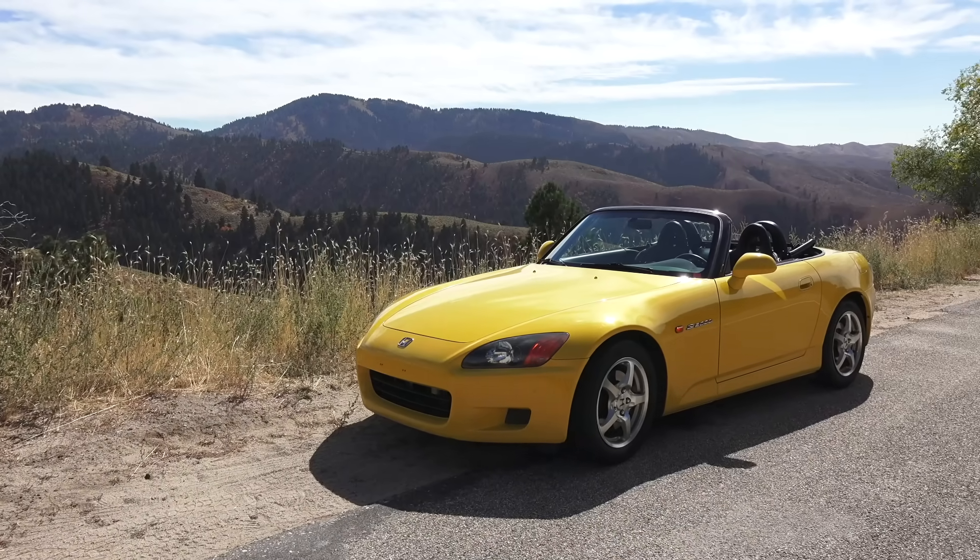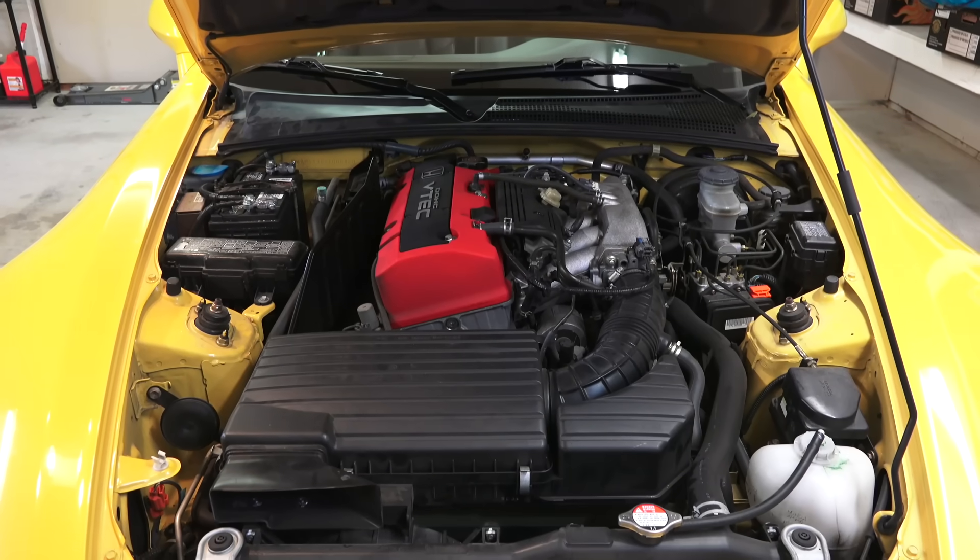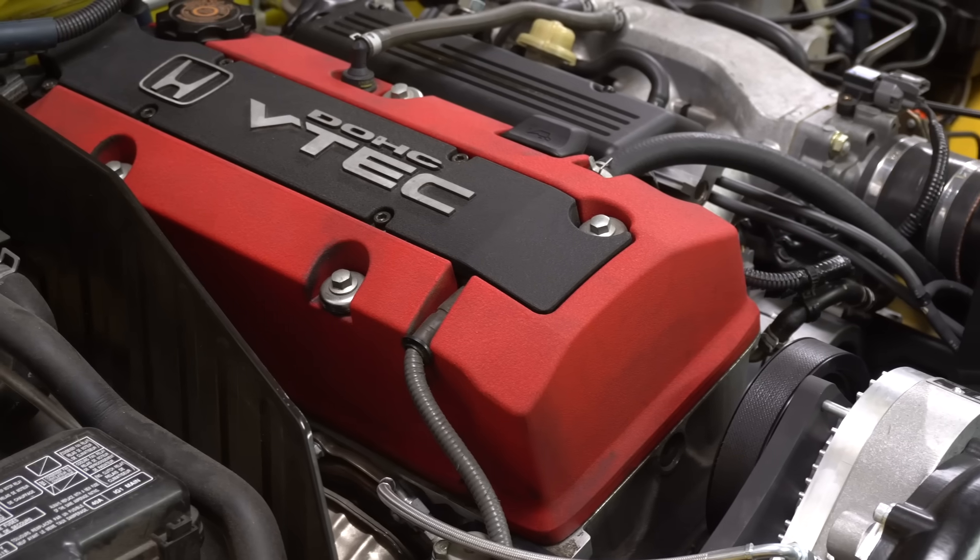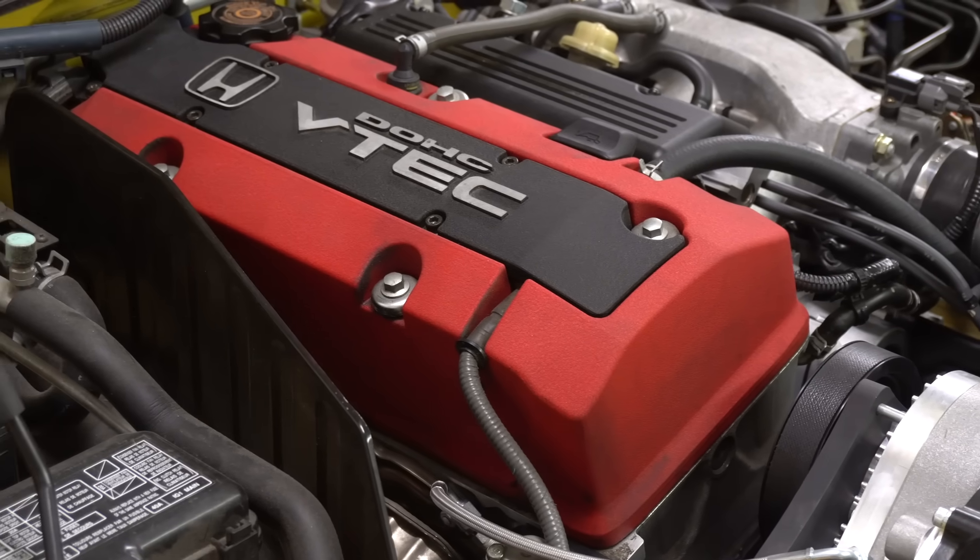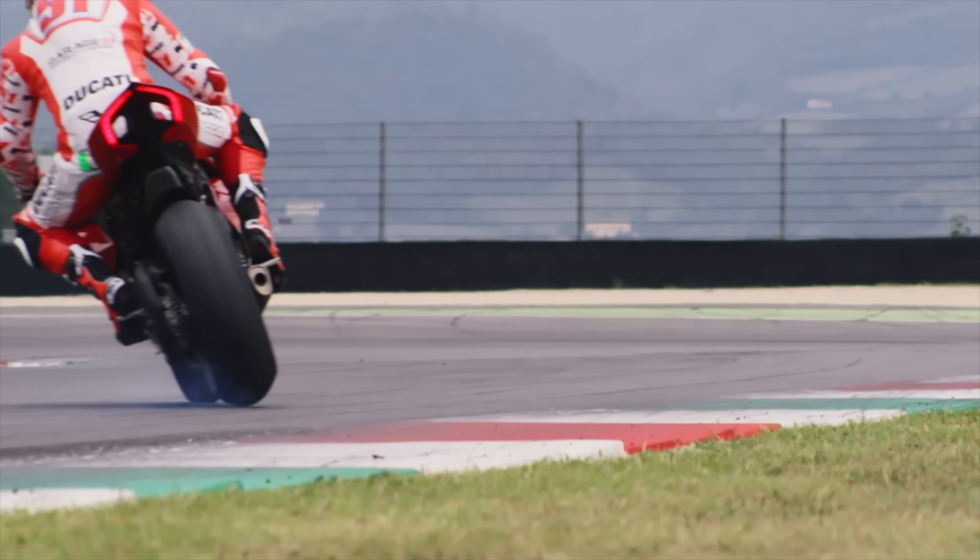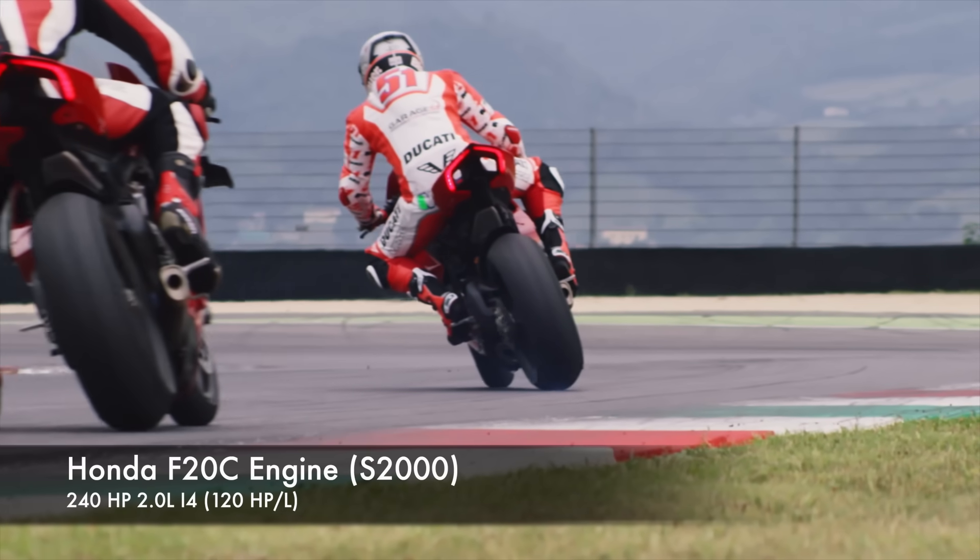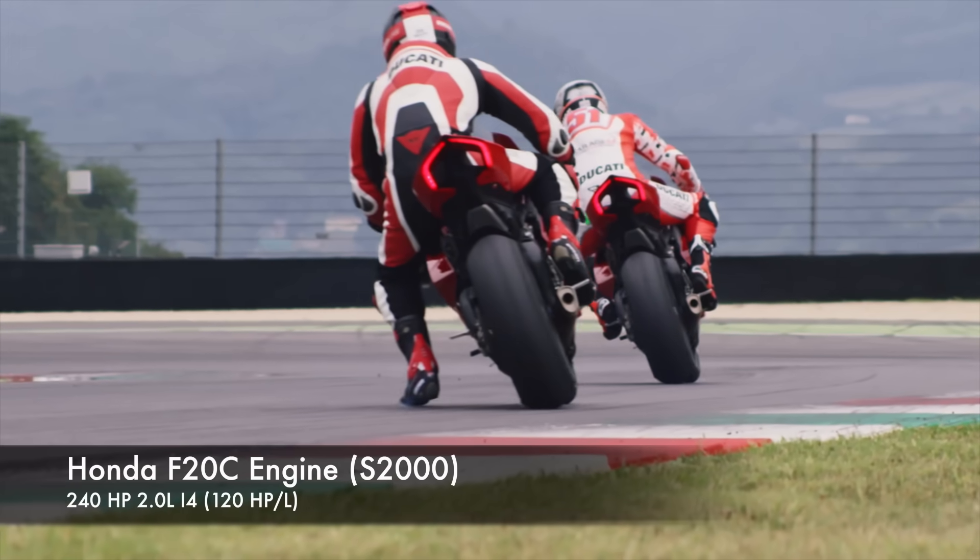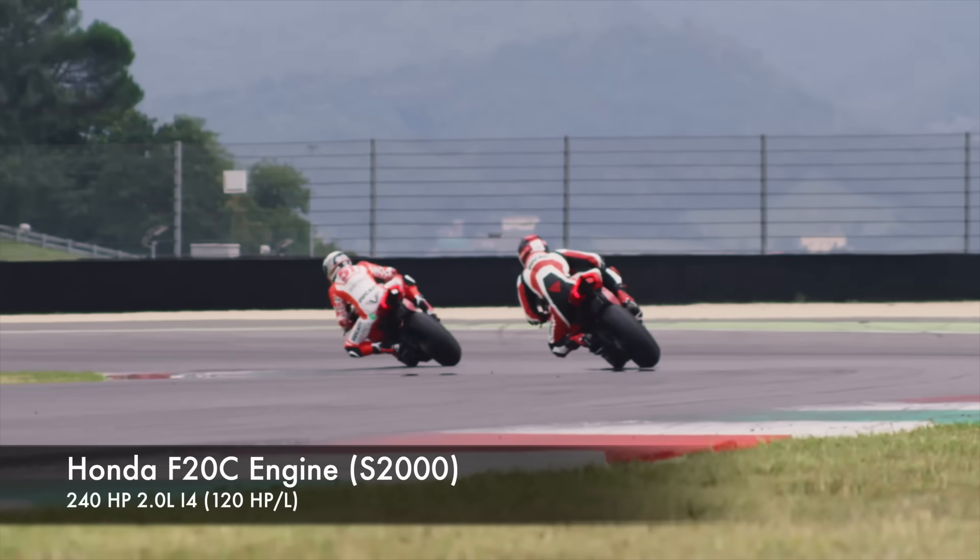When the Honda S2000 launched, its engine had the highest power per liter of any naturally aspirated production car. But car is really the key word here, because for bikes, Honda's 240 horsepower from a 2-liter engine, or 120 horsepower per liter, was nothing special.